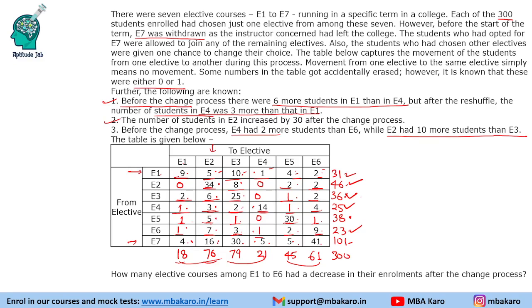It was not that difficult to fill because of the 0 or 1 condition — had the missing values been different numbers, it would have been more challenging. Question: How many elective courses among E1 to E6 had a decrease in their enrollment? E1 had a decrease, E2 did not, E3 increased, E4 also decreased, and both E5 and E6 increased. So there are two such electives that had a decrease in enrollment.